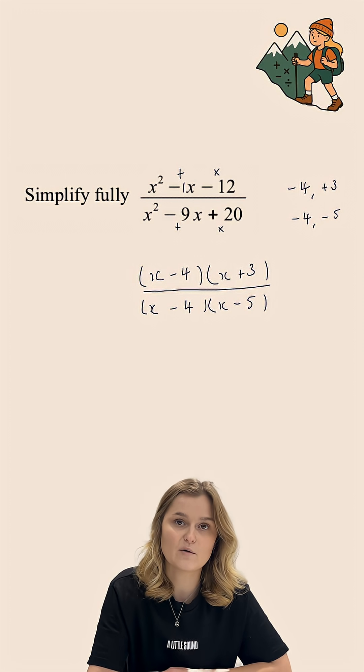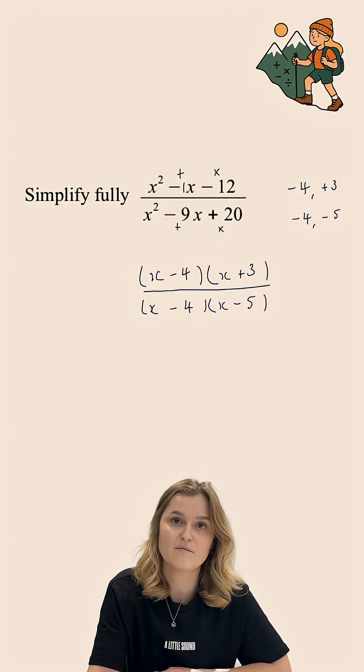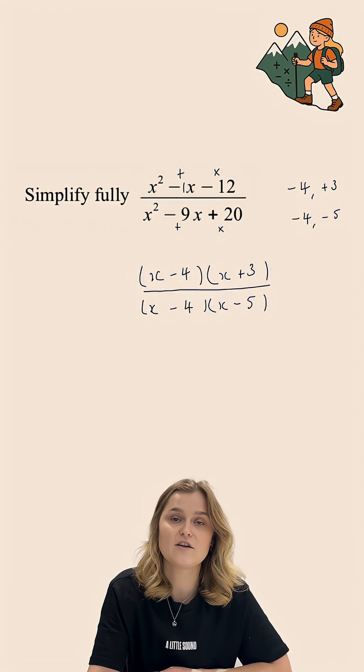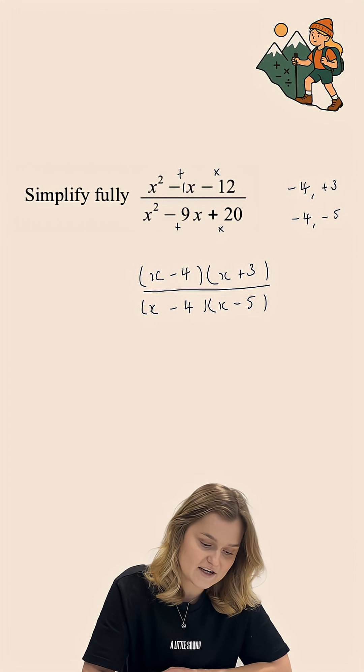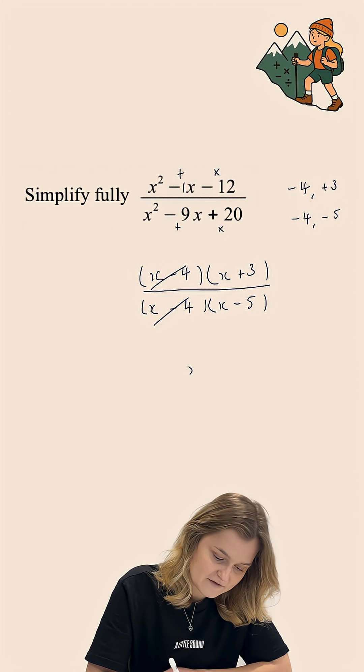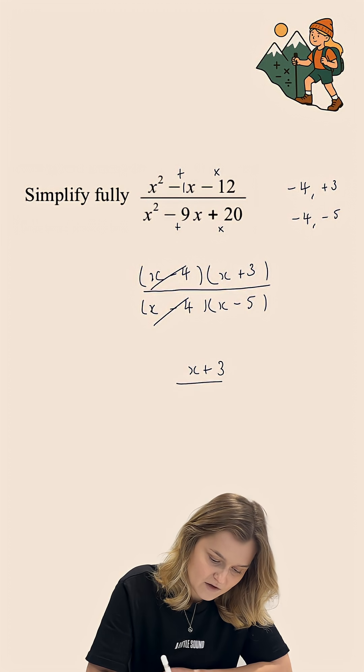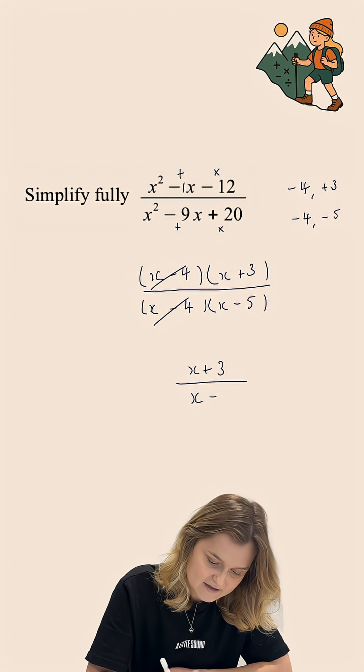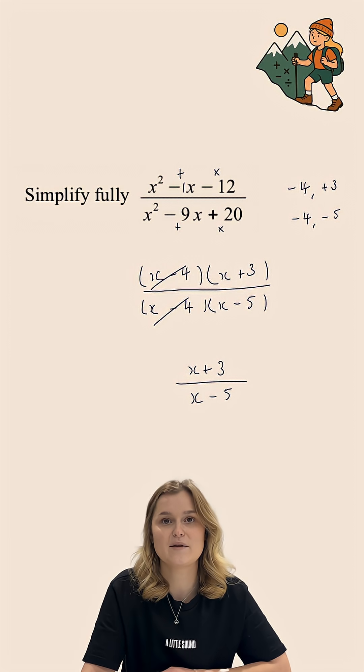Now, since I have x subtract 4 on the numerator and denominator of my fraction, I can divide the numerator and denominator by x minus 4. Essentially, this will cancel out these x minus 4 terms, and all I will be left with is x add 3 all over x subtract 5. And that is now fully simplified.